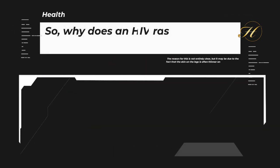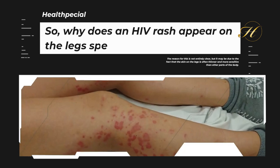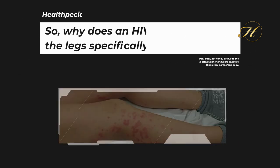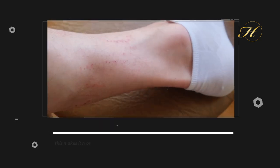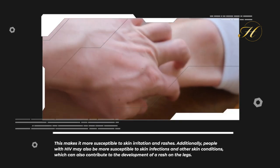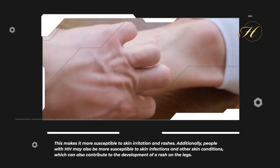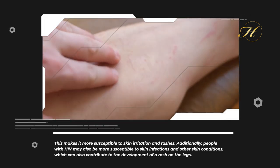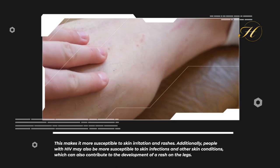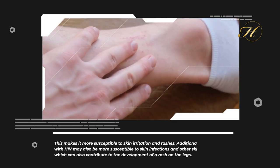Why does an HIV rash appear on the legs specifically? The reason is not entirely clear, but it may be due to the fact that the skin on the legs is often thinner and more sensitive than other parts of the body, making it more susceptible to skin irritation and rashes. Additionally, people with HIV may be more susceptible to skin infections, which can contribute to the development of a rash on the legs.